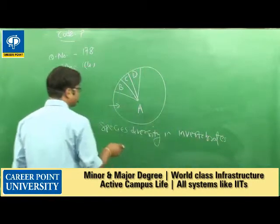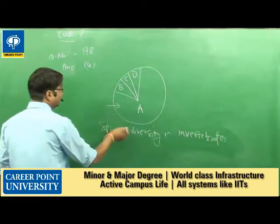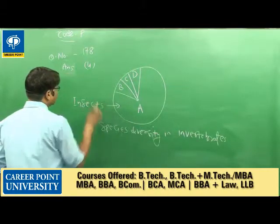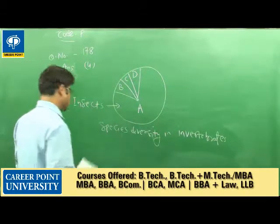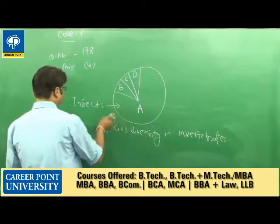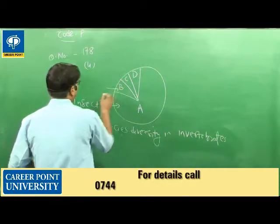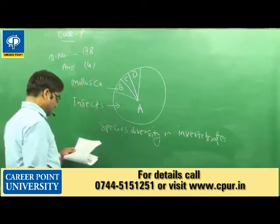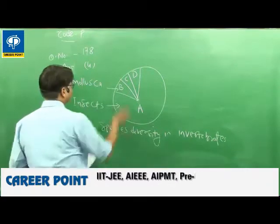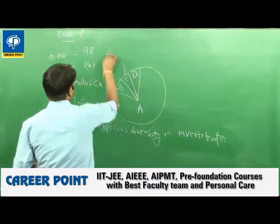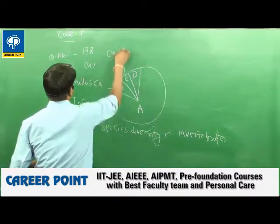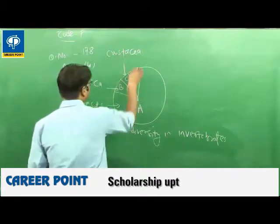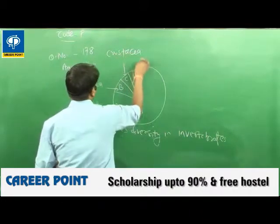The highest species diversity in invertebrates is of insects, or group Insecta. So A is insects. B is Mollusca. C is Crustacea. And D is other animal groups.